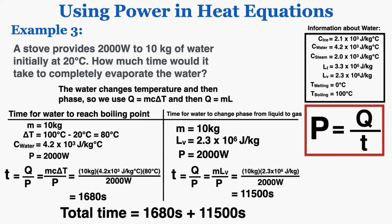So the total time is going to be 1,680 seconds plus 11,500 seconds, which is equal to 13,180 seconds. So those are three examples of how you can use the power equation to calculate power and time when you're working with heat.